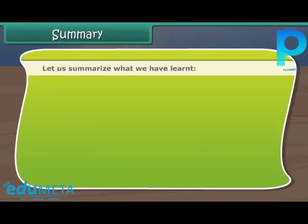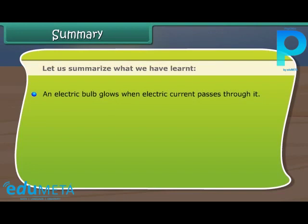Let us summarize what we have learned. An electric bulb glows when electric current passes through it. A closed circuit allows the electric current to flow through it.